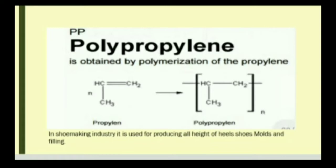What is polypropylene? It is obtained by polymerization of propylene. In the shoemaking industry, it is used for producing the outer height of shoes, molds, and fillings.